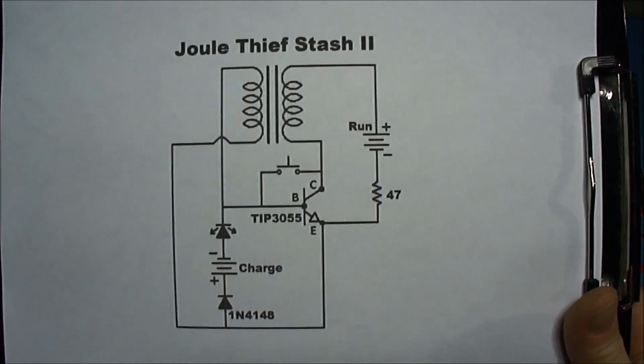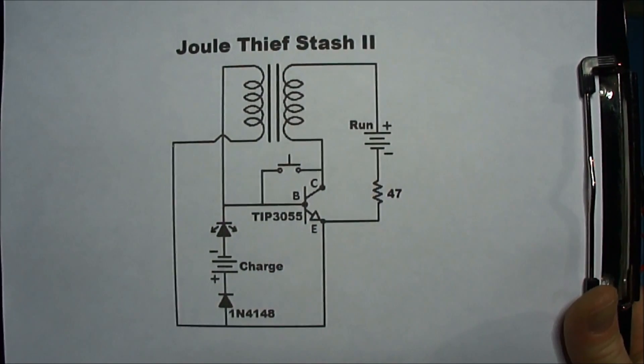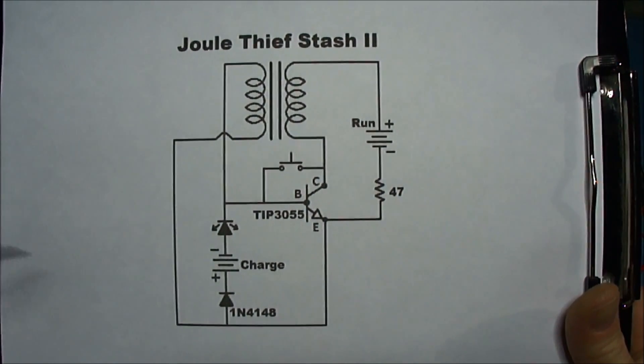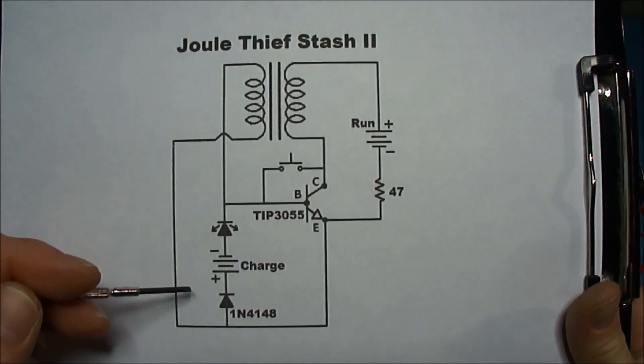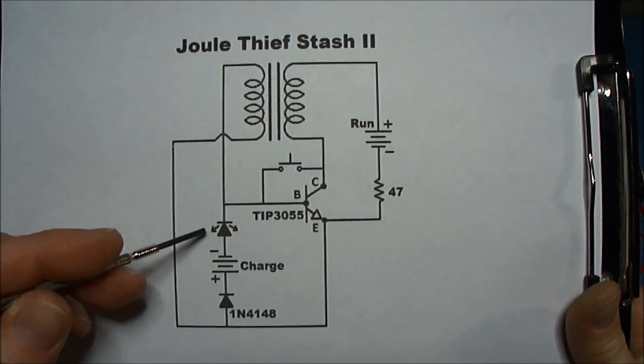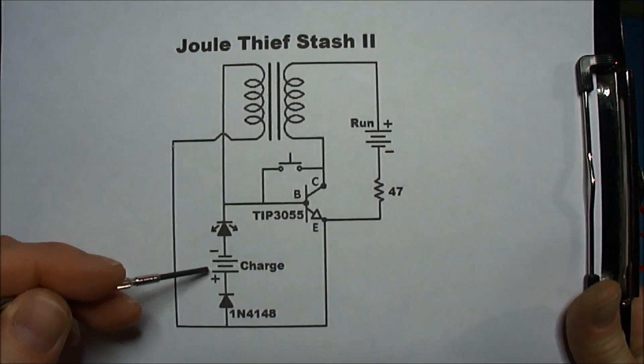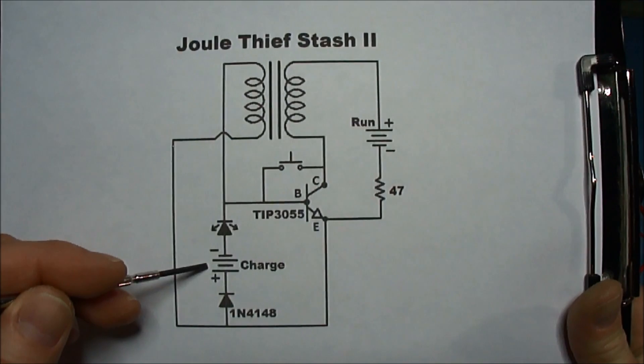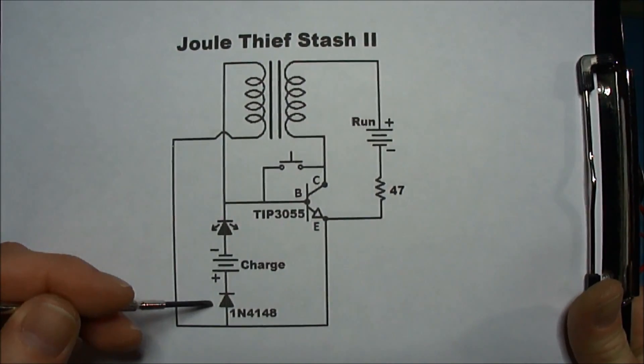This is what I'm calling a Jewel Thief Stash Charger. This is version 2. In all these different versions, I'm using this same configuration with the charge battery in series with the LED and a diode.